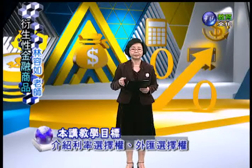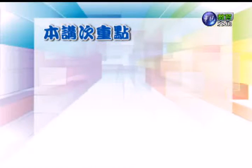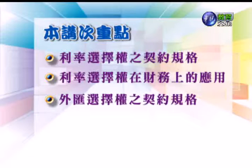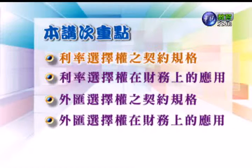我们要介绍利率选择权跟外汇选择权这两项商品。本讲次的重点：第一，利率选择权的契约规格；第二，利率选择权在财务上的应用；第三，外汇选择权的契约规格；第四，外汇选择权在财务上的应用。首先我们进入第一个重点。